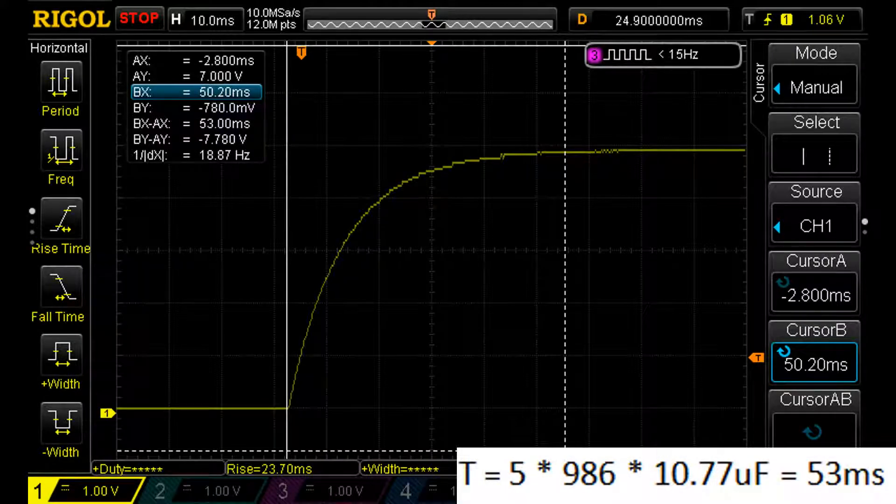On this scope trace you can see I've changed the cursor to 53ms, but still this capacitor hasn't finished charging. So why is this?